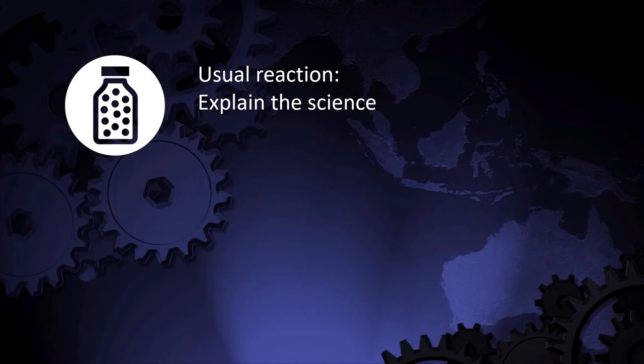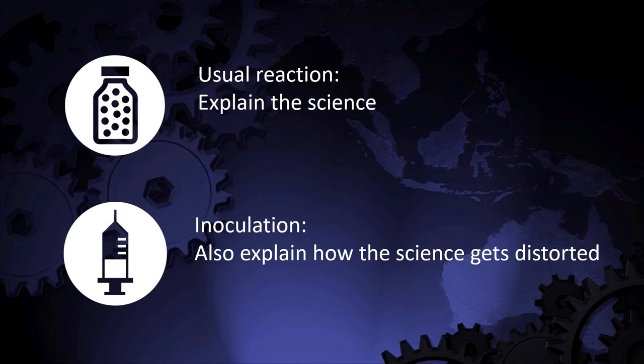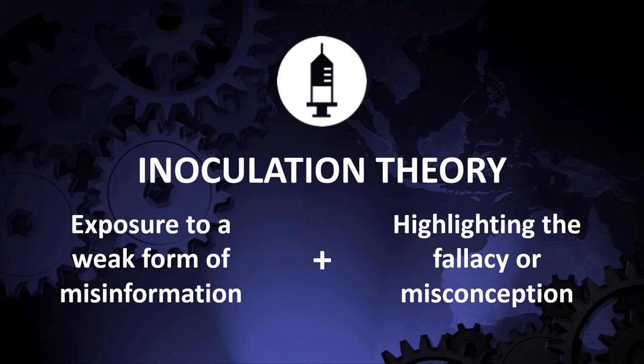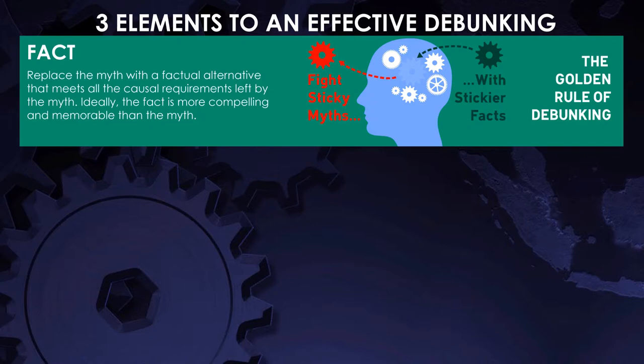The usual reaction to science-related misinformation is to explain the science and to explain it even more and more. This isn't always very effective. This is where inoculation comes into play — it adds an explanation of how the science gets distorted. This special type of inoculation is comparable to getting vaccinated, where your body gets exposed to an inactive or weak strain of a virus. In our case, the inoculation combines the exposure to a weak form of the misinformation with explaining the fallacy or misconception.